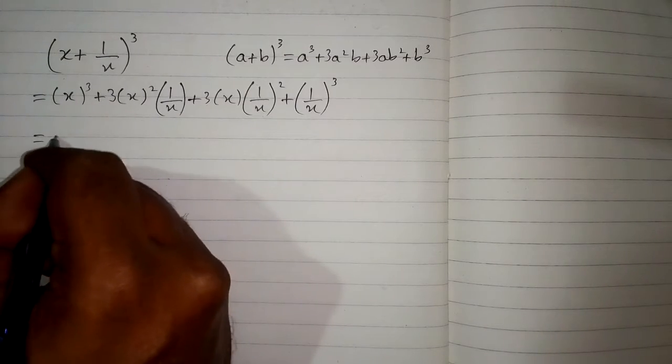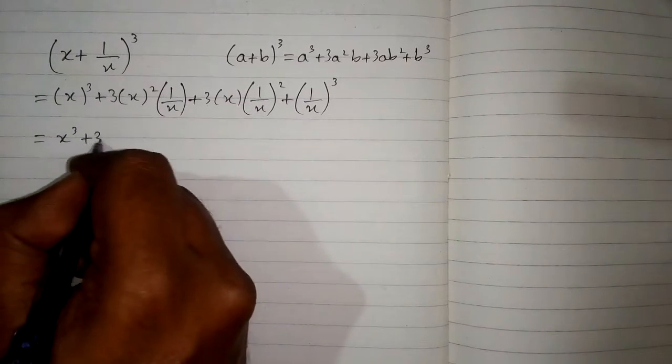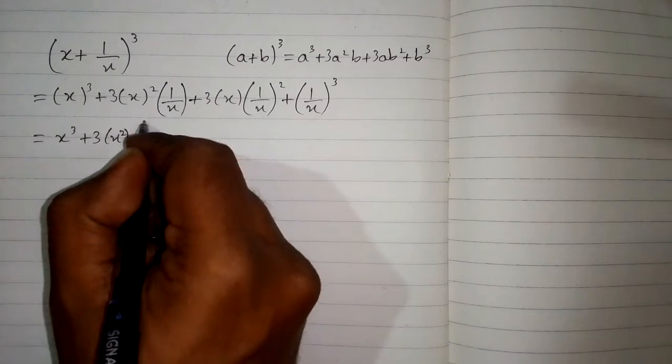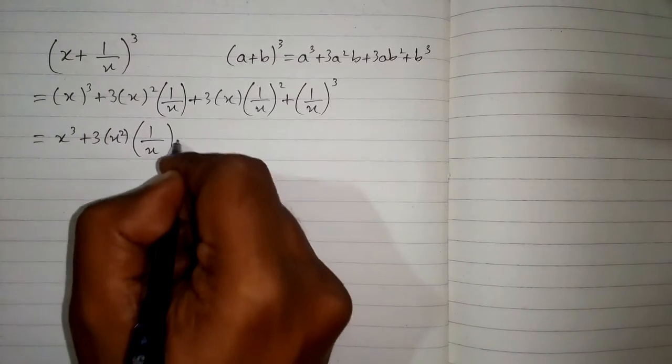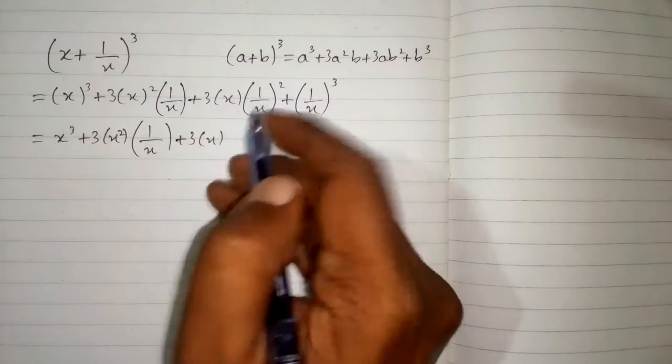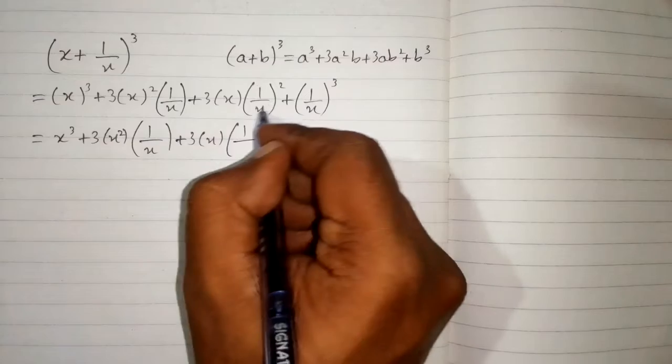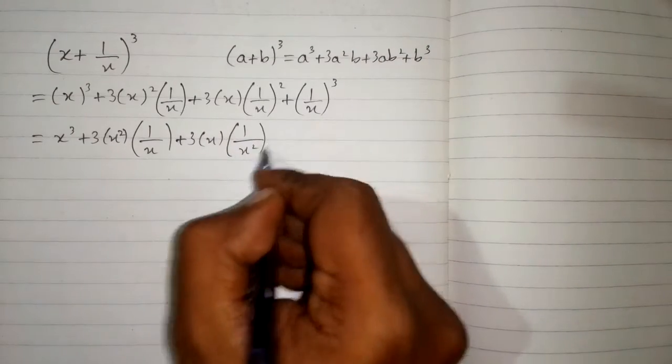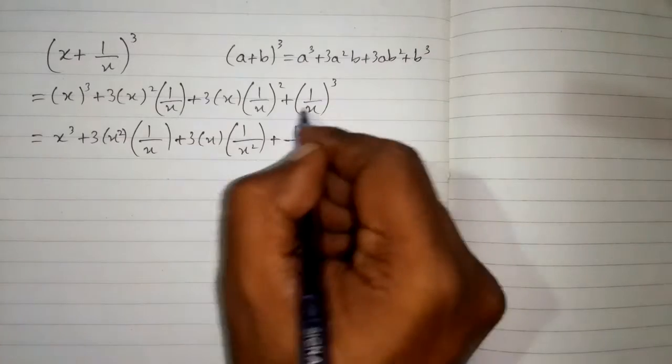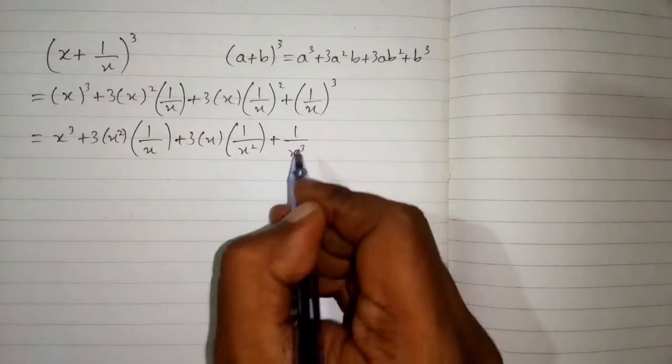The cube of x is x³ and the square of x is x². The square of 1 is 1 and the square of x is x². The cube of 1 is 1 and the cube of x is x³.